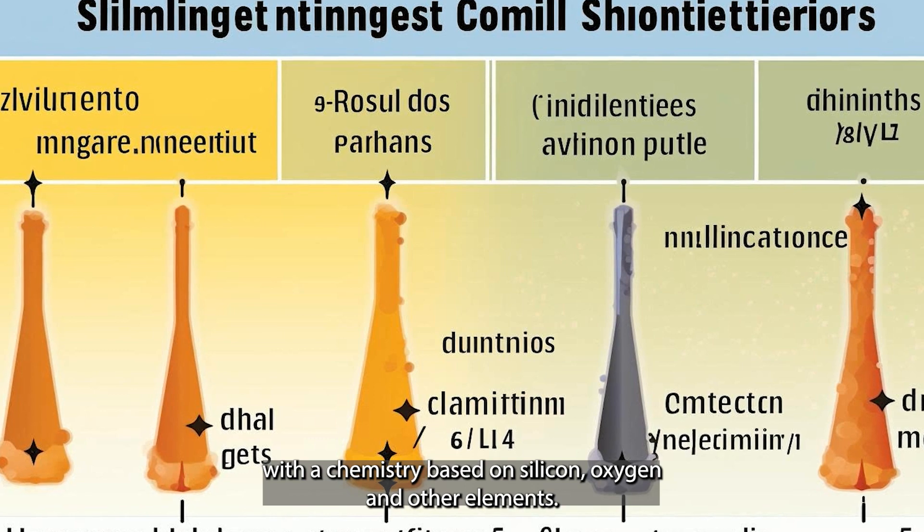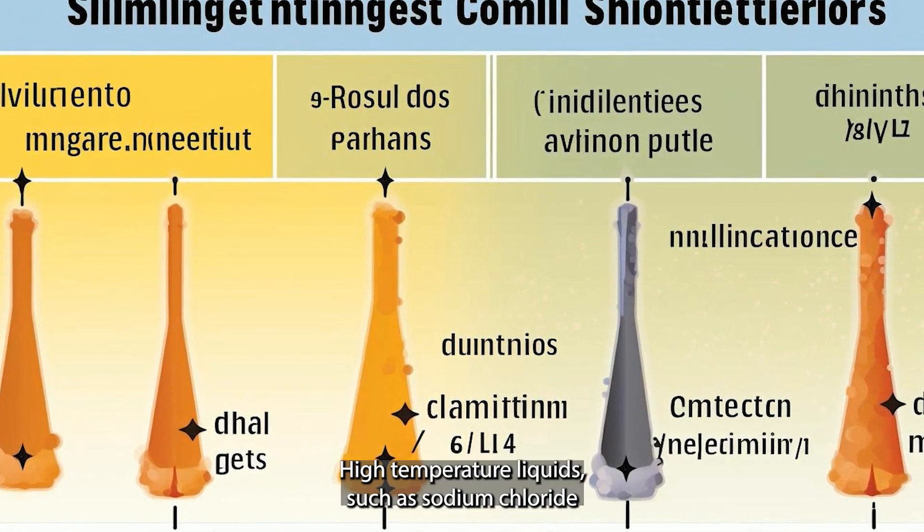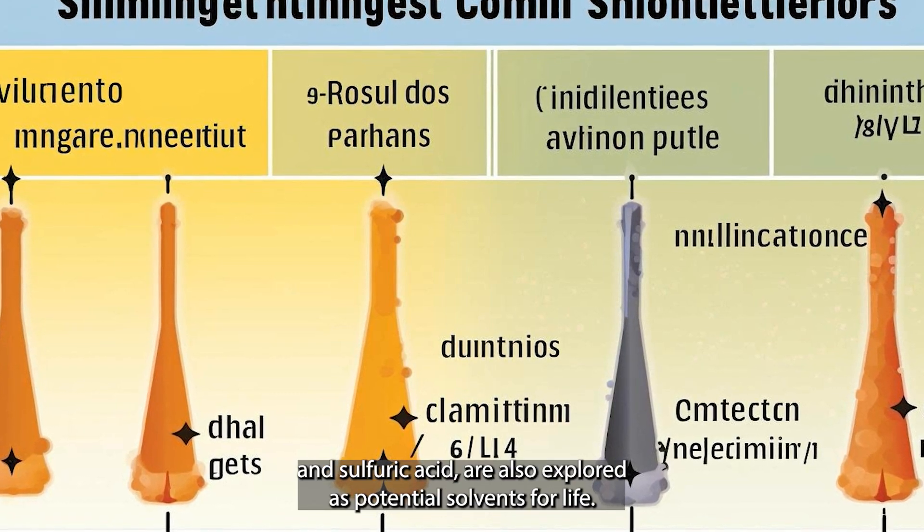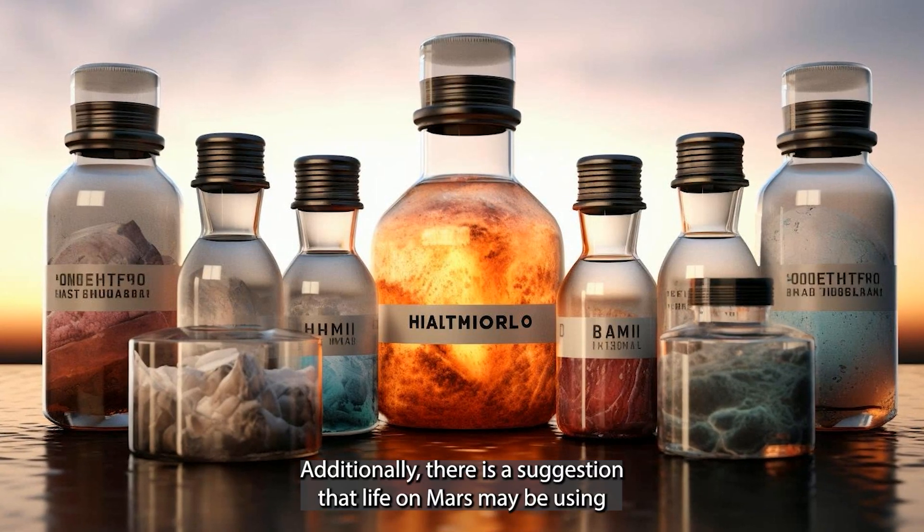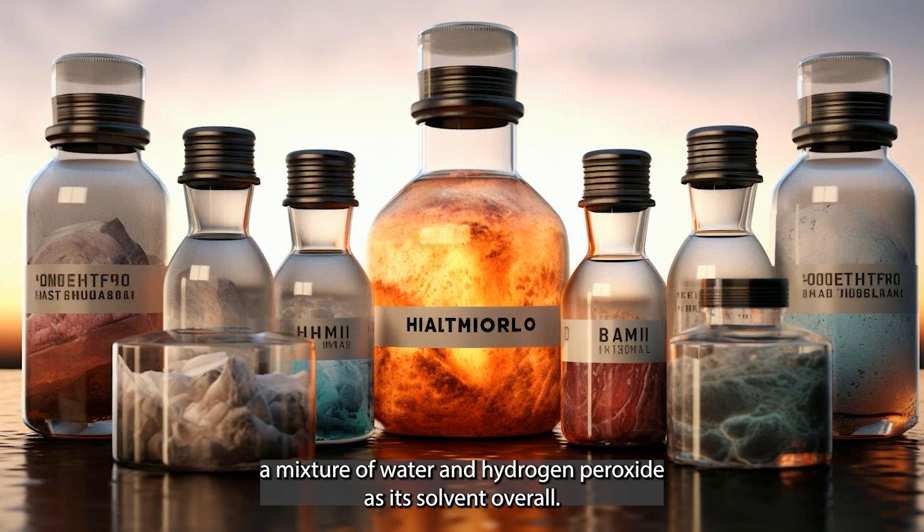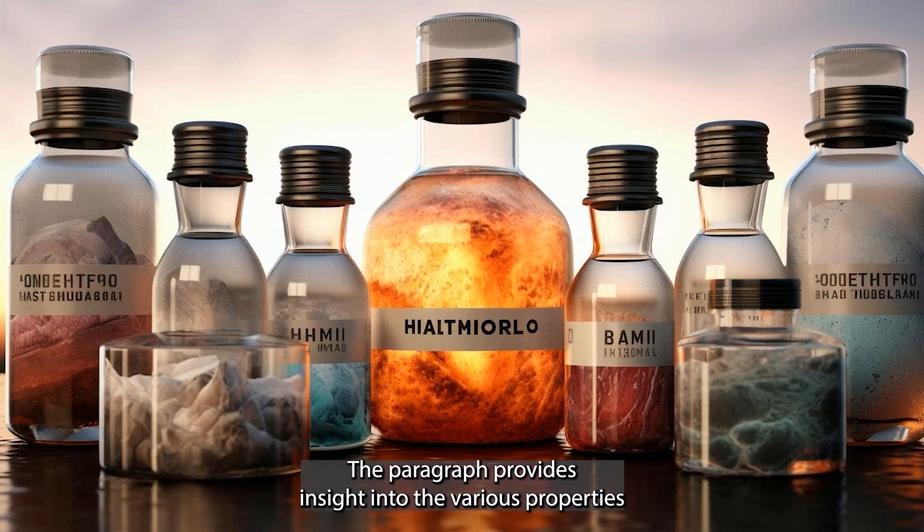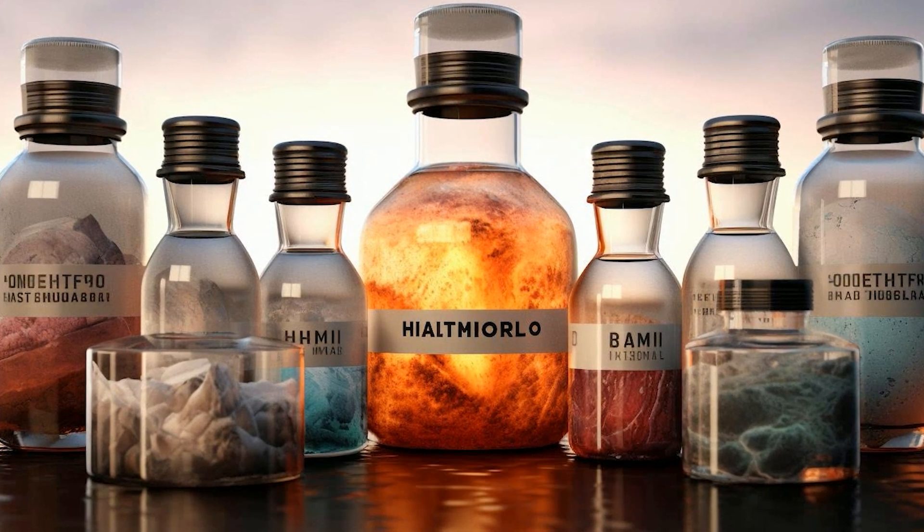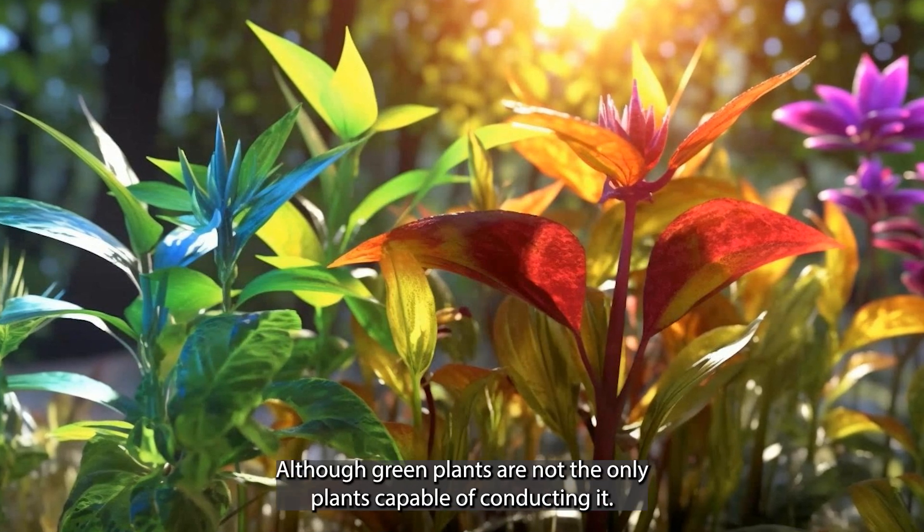Like hydrogen cyanide and ammonia, silica and silicate rocks may be viable options for organisms with a chemistry based on silicon, oxygen, and other elements. High-temperature liquids such as sodium chloride and sulfuric acid are also explored as potential solvents for life. Additionally, there is a suggestion that life on Mars may be using a mixture of water and hydrogen peroxide as its solvent. Overall, the paragraph provides insight into the various properties and limitations of different solvents that could support life in the universe.